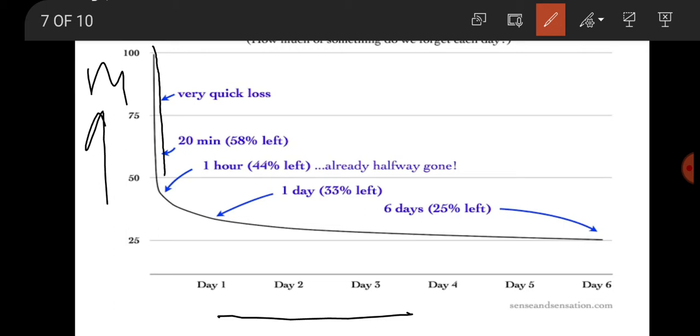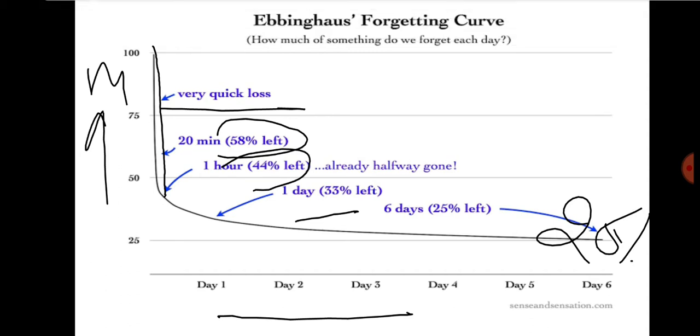See how it is steadily decreased very quickly here. Almost 75% is left after a very quick loss, and after 20 minutes only 58% is left, and after 1 hour only 44% is left, and after 1 day 33% is left, and after 6 days only 25% is left. This is the forgetting curve when we don't review what we learned and don't practice or do revision.